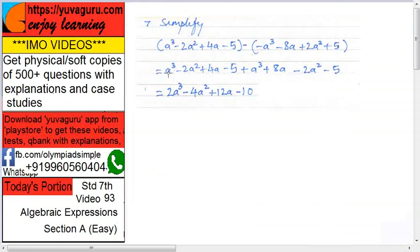So a³ a³, it becomes 2a³. 2a² and 2a², both have minus sign, so minus 4a². Sign of the bigger, so both are same, that's why minus sign same. 4a and 8a, that is 12a.